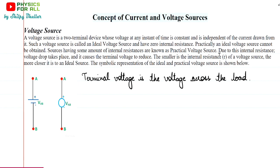The voltage across the load will be lesser than the voltage of the source when there is internal resistance. Smaller the internal resistance, the closer your source would be to an ideal source, because if internal resistance is small or negligible, voltage drop would also be negligible, and then there would be negligible drop in terminal voltage. Everything depends on internal resistance — whether the source has internal resistance or not, and if it has, how much. Now you can see the symbolic representation: ideal sources are shown by the cell symbol with a longer positive line and shorter negative line, and for practical voltage source we use a circle.